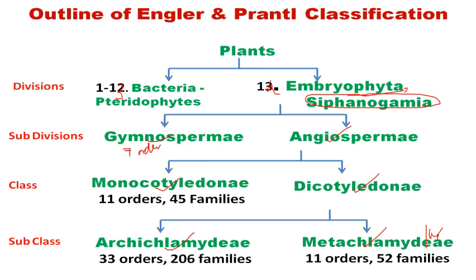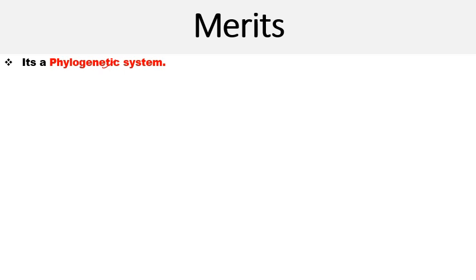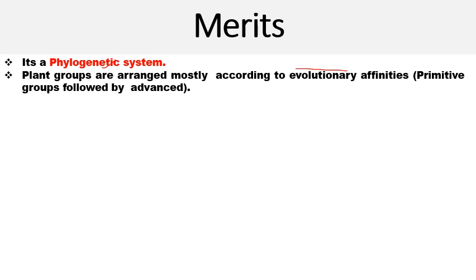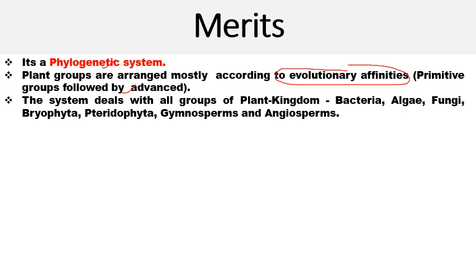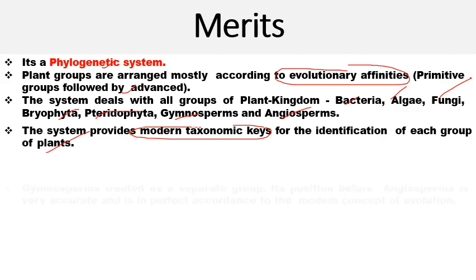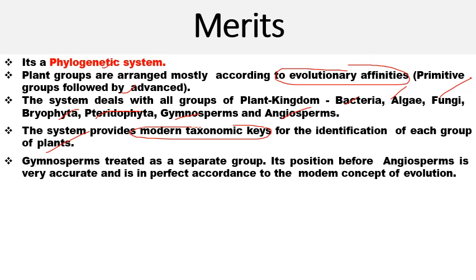This is the outline of the Engler and Prantl system of classification, which is considered the phylogenetic system of classification. Regarding the merits: it was a phylogenetic system that studied the evolutionary relatedness and evolutionary history of plant groups, with plant groups arranged according to evolutionary affinities — primitive groups followed by advanced ones. The system deals with all groups of the plant kingdom ranging from bacteria, algae, fungi, Bryophyta, Pteridophyta, gymnosperms, and angiosperms. The system also provided modern taxonomic keys for identification of each plant group.